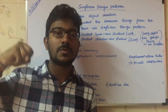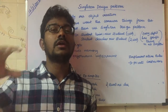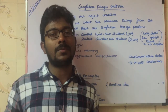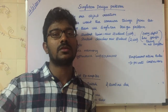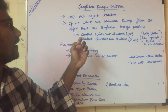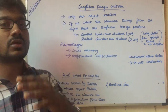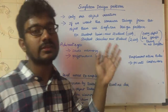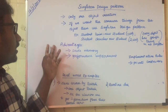We shouldn't use Singleton for these use cases, because if an object has its own specific properties, Singleton is not appropriate. However, if an object has common properties — if it doesn't have any specific properties — then we can use the Singleton pattern. We will cover that with real-world examples in the later part of this video.